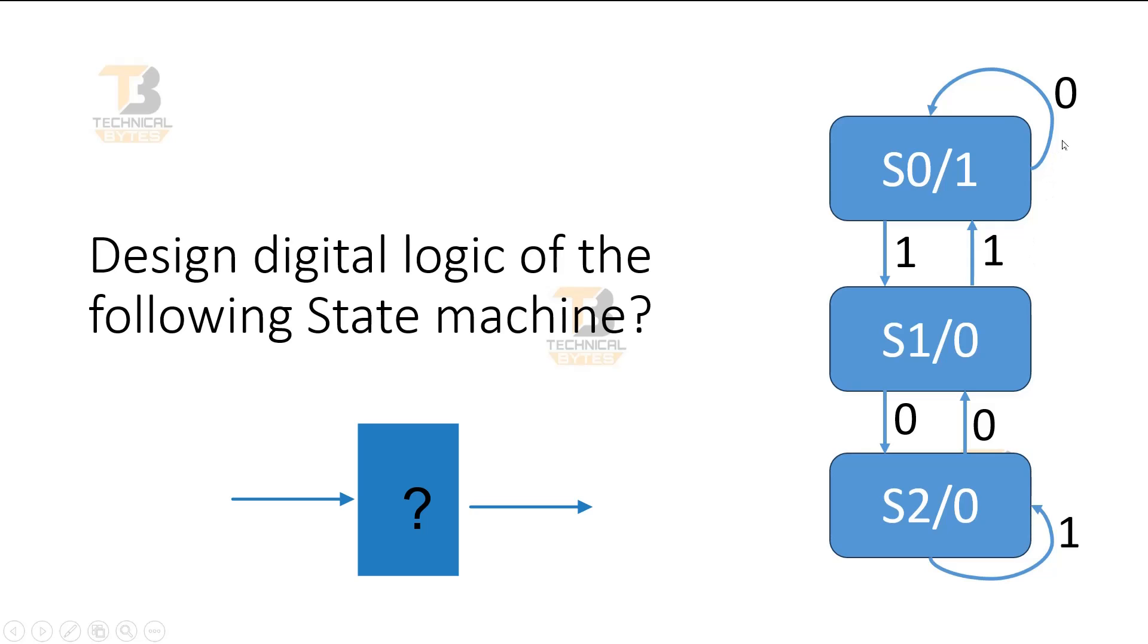In S1 state, if input is 0, it will go to S2. If input is 1, it will come to S0.